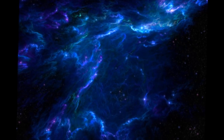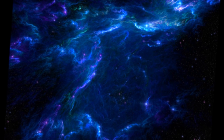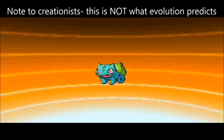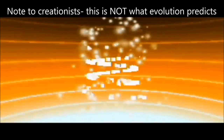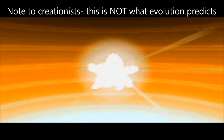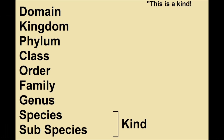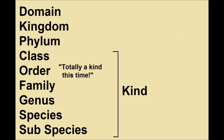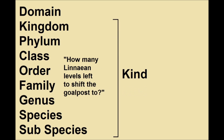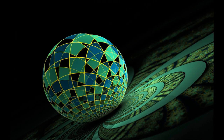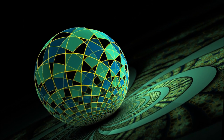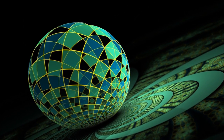A much more common and much more frustrating example of nebulous creationist language is when they insist that evolutionary theory predicts a change in kinds, without actually defining what kinds are. This allows them to arbitrarily redefine kinds however convenient, and as I've shown in an earlier video, the definition of kinds can range from subspecies to domain. Even on the rare occasions that creationists do decide to define kinds, they still lack consistency.